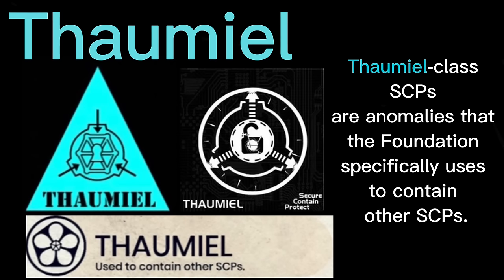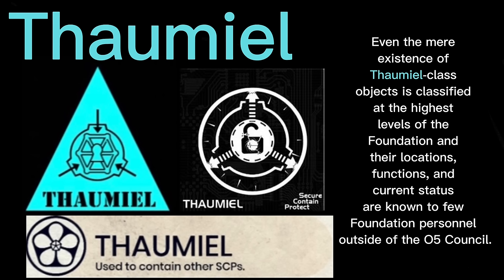Thaumiel class SCPs are anomalies that the Foundation specifically uses to contain other SCPs. Even the mere existence of Thaumiel class objects is classified at the highest levels of the Foundation, and their locations, functions, and current status are known to few Foundation personnel outside of the O5 Council.